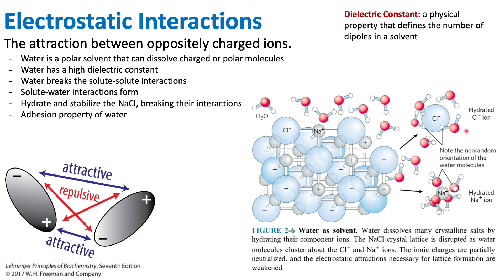If the partially negative end of the water were facing the chloride, it would repel it. So this is not a random orientation — it is ordered. We have to remember that the water molecule is polar, so it has two dipoles: the hydrogens each have a partial positive charge and the oxygen has a partial negative charge.